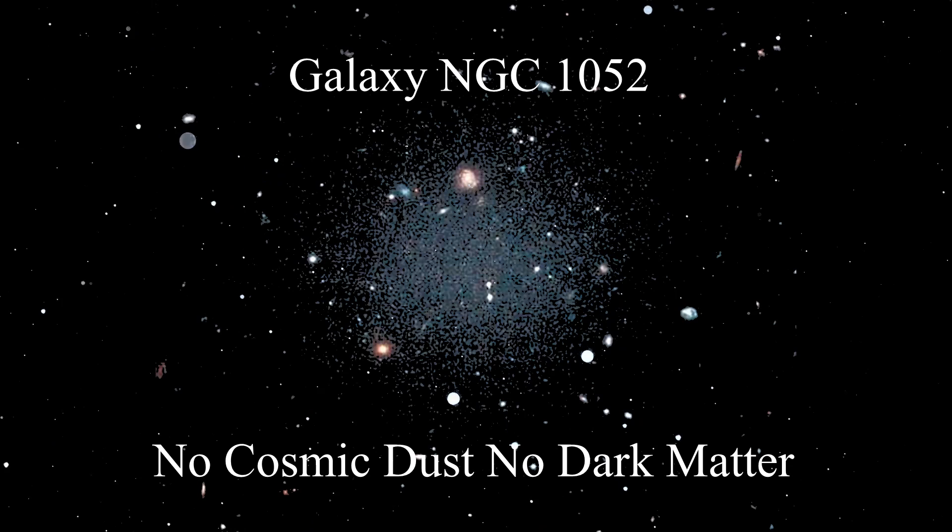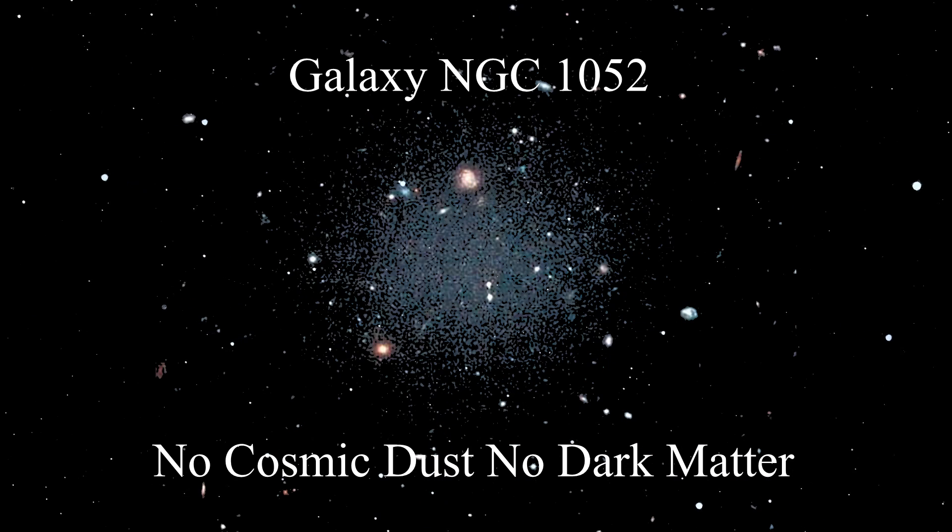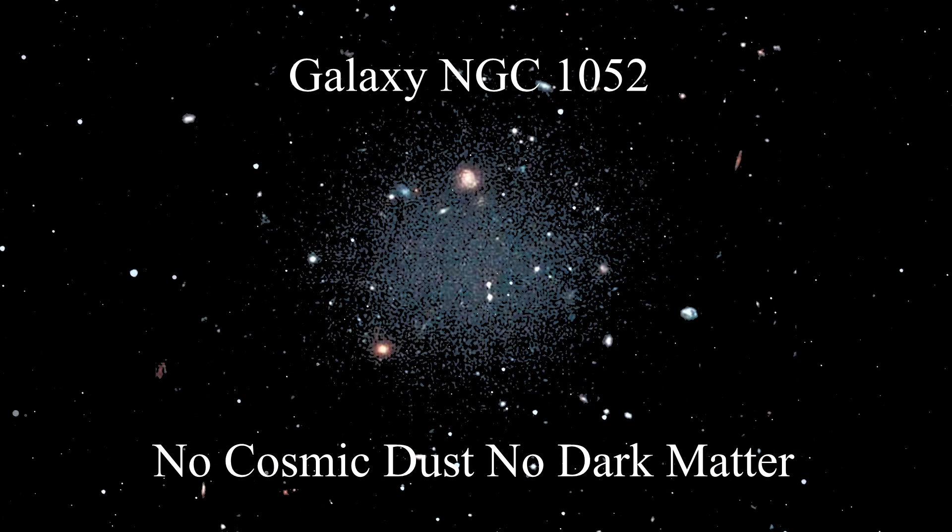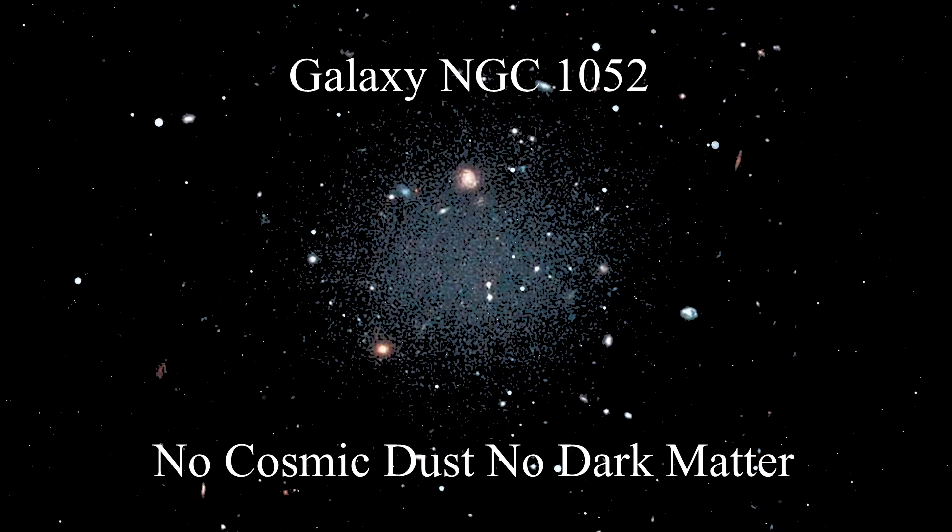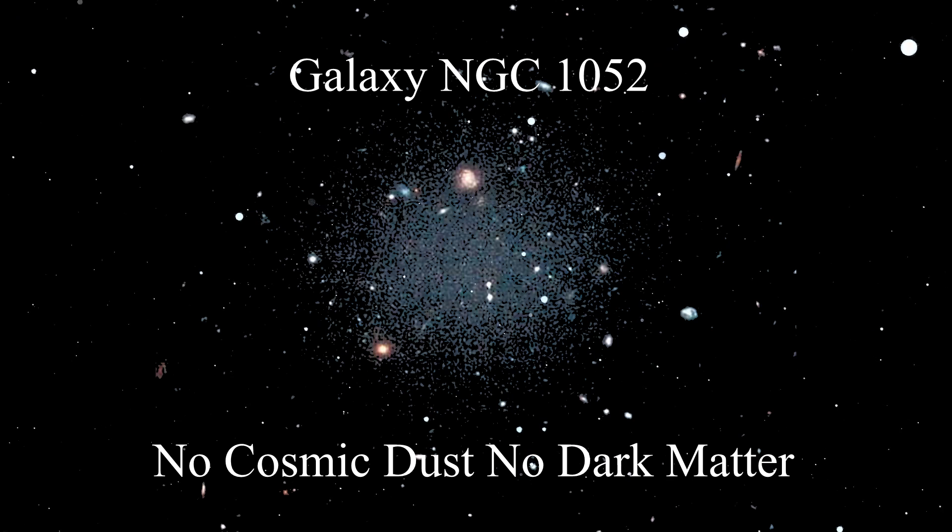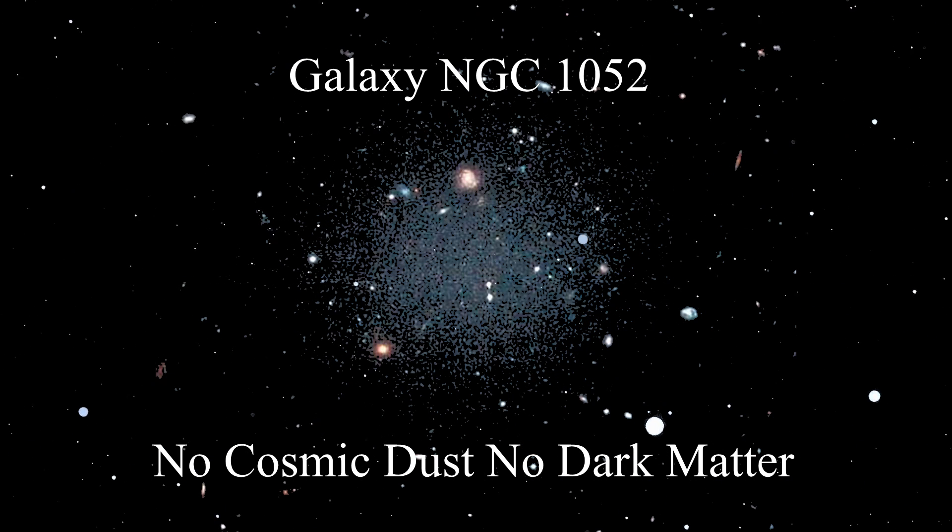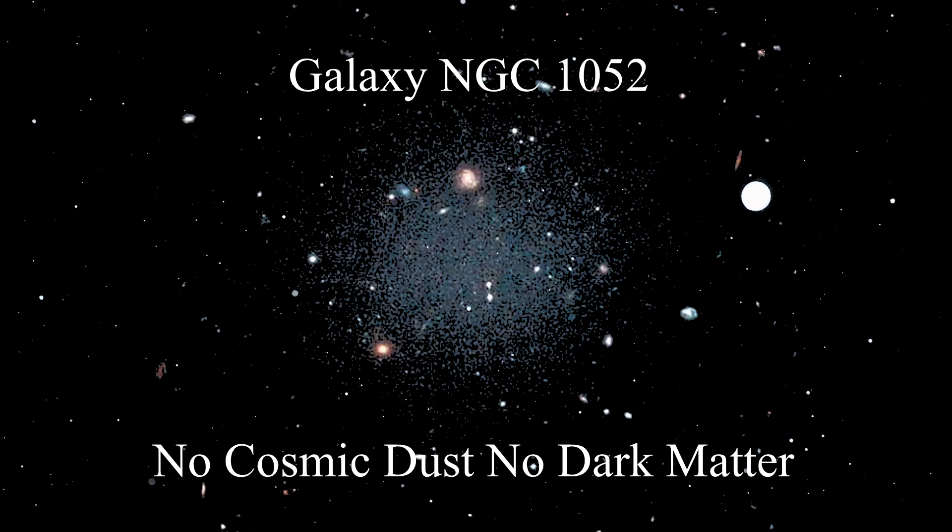As support for this theory, the Hubble Space Telescope has revealed a galaxy NGC 1052, 72 million light-years from Earth, where one can literally see through to other galaxies behind it. It is an ultradiffuse galaxy, almost as wide as the Milky Way, but contains only 1/200th of the number of stars in the Milky Way.